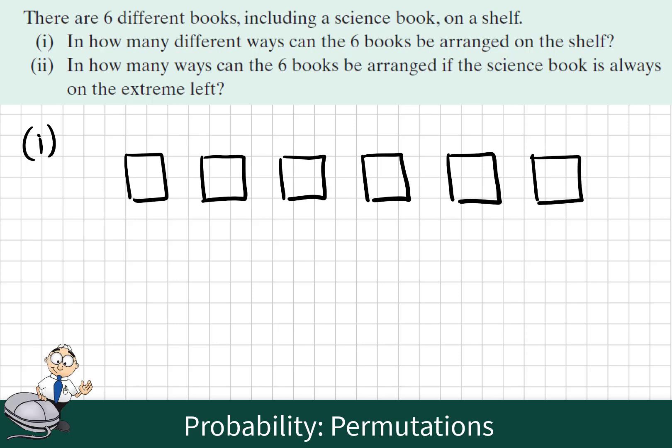Now let's think how many options we have for the first position where we have six books. So in the first place there are six choices, in the second only five because we have used up one of the books, then four, three, two and one.